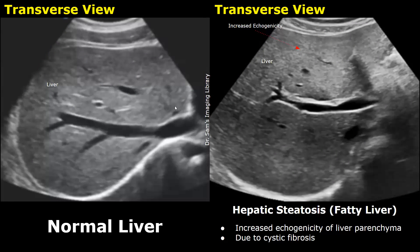This is a normal image of the liver in transverse plane in a child. Here we have a fatty liver case — hepatic steatosis — where increased echogenicity of the liver parenchyma is seen with some sparing in this region. This was due to cystic fibrosis; in children, fatty liver can occur due to cystic fibrosis.